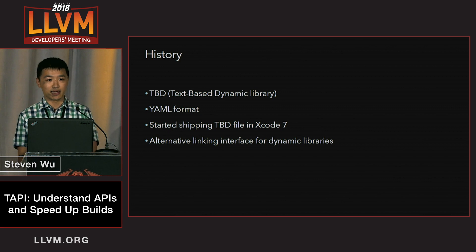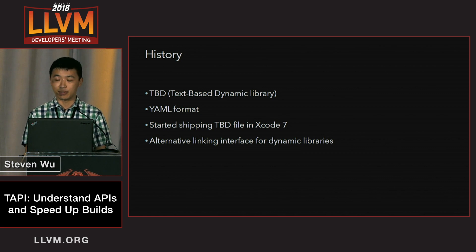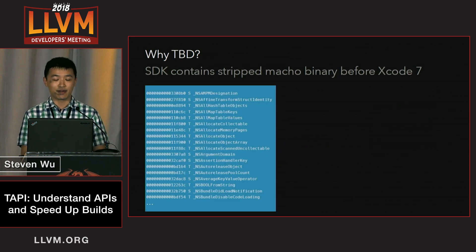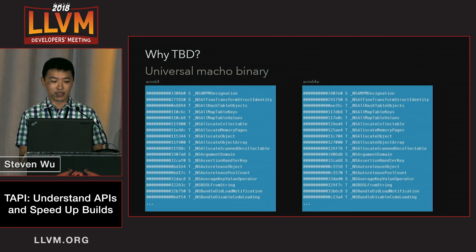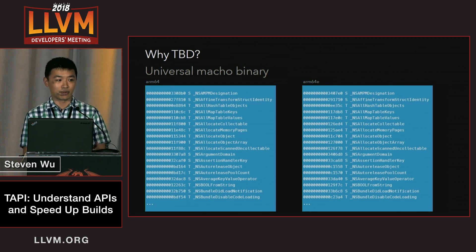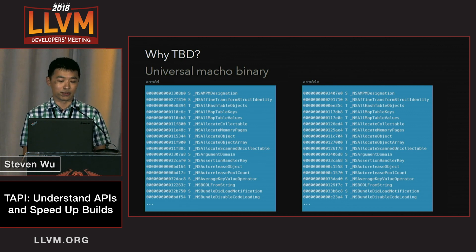If you look at the Apple SDK, we ship a TBD file. TBD stands for Text-Based Dynamic Library. It's a YAML format alternative linker interface for dynamic libraries, and we first started shipping it in Xcode 7. Before TBD, the SDK actually contained stripped macro binaries, which is basically the symbol table. But we also have universal macro binaries. If you look at different slices of a single dynamic library, you can see they often share the same symbol table. But because of the limitation of the macro binary format, we have to keep both symbol tables and duplicate the storage.